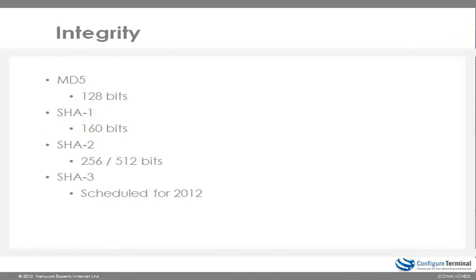There are various hashing algorithms that can be used. MD5, once again, is 128 bits. MD5 is not recommended today in networking environments. SHA1 is 160 bits in length. SHA2 is 256 or 512 bits in length. SHA3 is scheduled for release in 2012. SHA2 is what's recommended in today's networking environments.